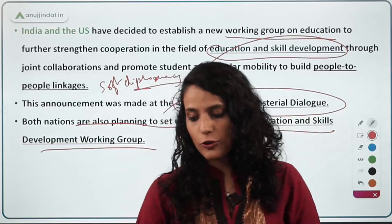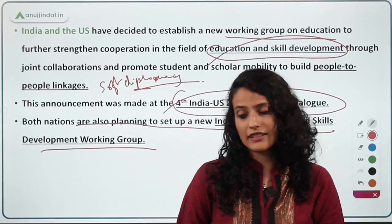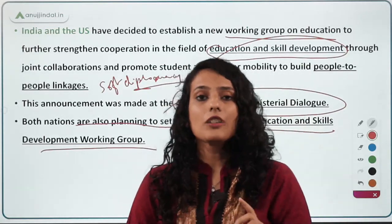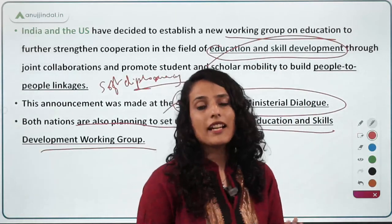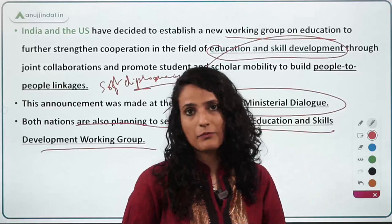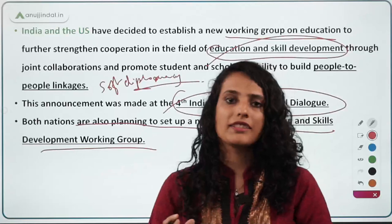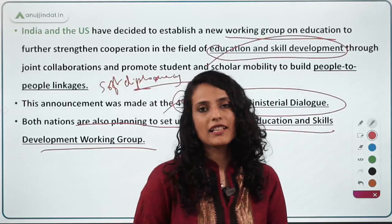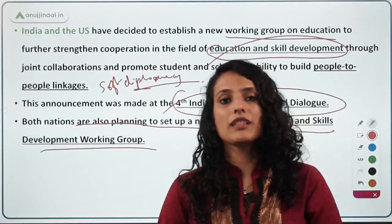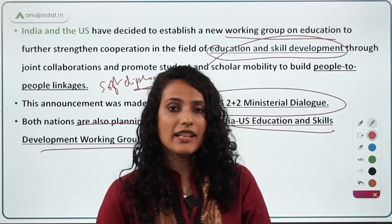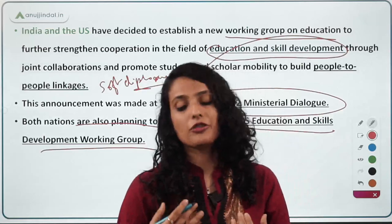The 2+2 ministerial meeting format is also established with other partners including the Quadrilateral Security Dialogue members — US, Australia, and Japan — and with Russia. Important agreements signed between US and India under the 2+2 framework include the Logistics Exchange Memorandum of Agreement (LEMOA), the Basic Exchange and Cooperation Agreement (BECA) signed in 2020, and the Communications Compatibility and Security Agreement (COMCASA).